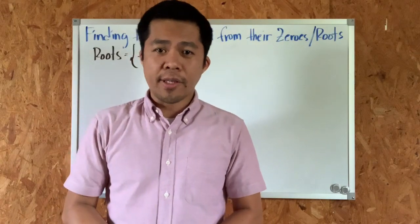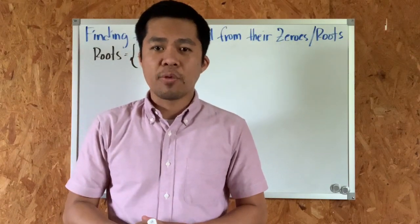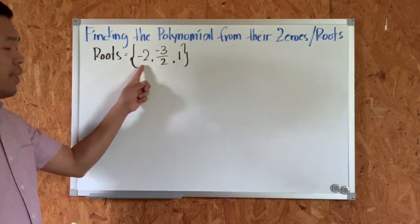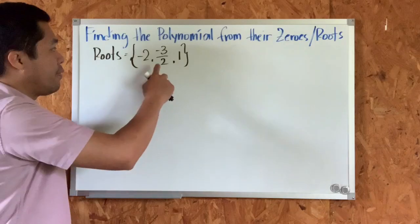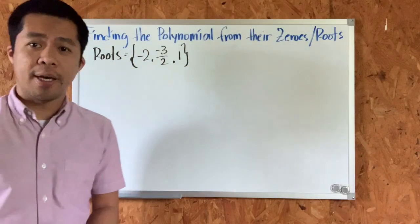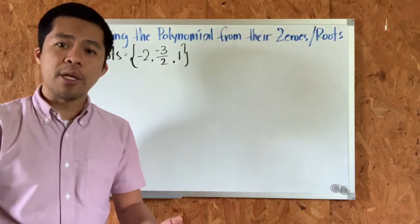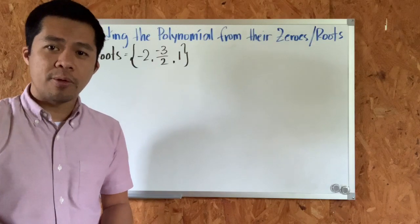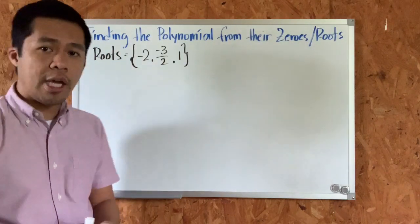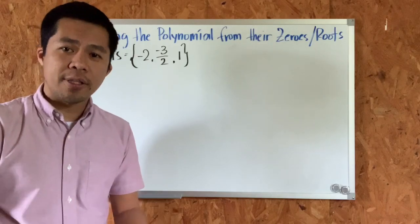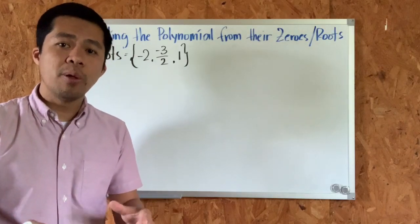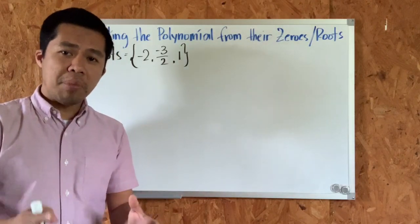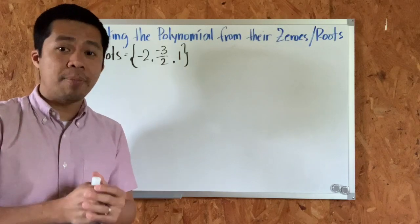Let me give you another example. What if we have three roots or three zeros? Our roots are negative two, negative three over two, and positive one. We need to do two things: first, we will convert each root into a binomial, and then we will multiply those binomials. Since we have three roots, that means we will have three binomials.